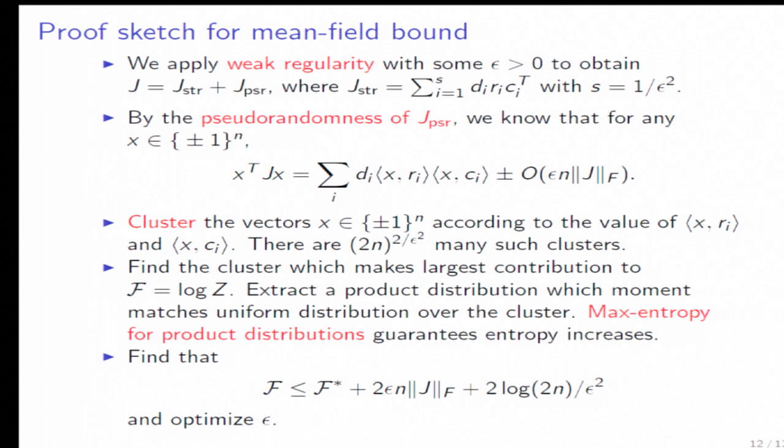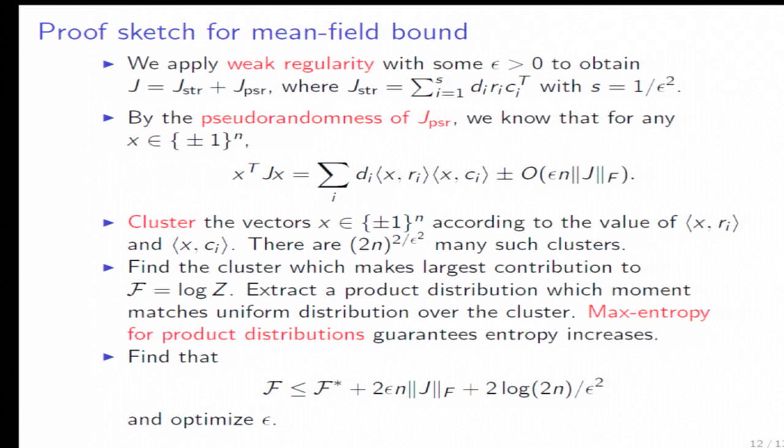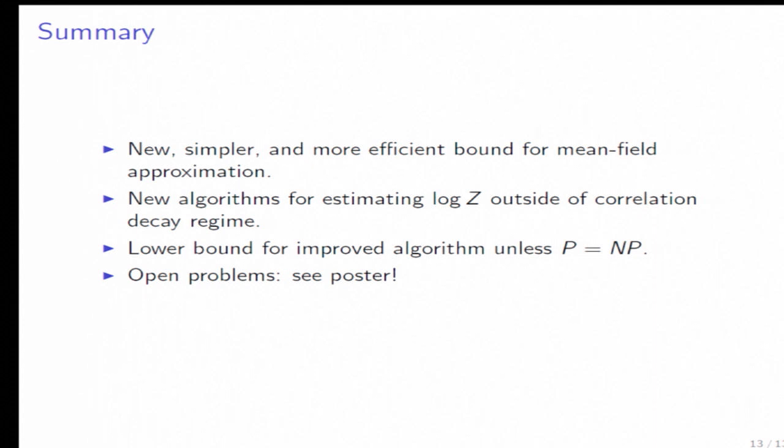And the thing that's important is, actually, there's only, maybe if I go back to this picture, I'm actually just going to count all the, for every state, there's only so many possibilities for the number of elements that are spin plus in each R_i or C_i. So I'll just cluster the spins by all this information. So there's not too many clusters. And then I'll just extract the best cluster. And finally, there's a trick where I use max entropy to guarantee that I can find an even better product distribution. So I'll get some nice results once I optimize epsilon. And that's basically the proof.